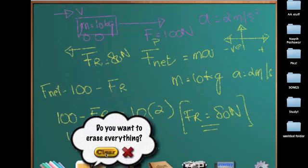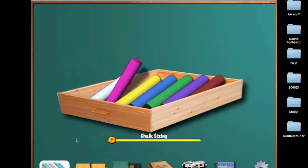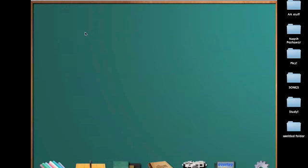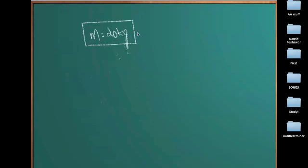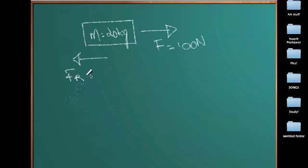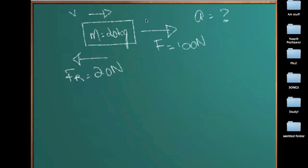Let's take another example. We have a mass of 20 kilograms, and I am pulling it in this direction with a force of 100 newtons. Since the velocity is in this direction, the friction force opposes it — the friction force in the opposite direction is 20 newtons. I need to find the acceleration of this block.